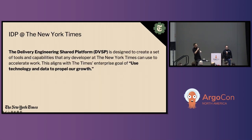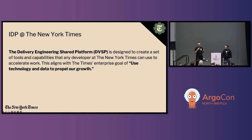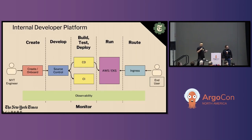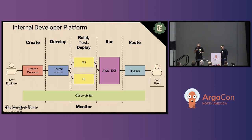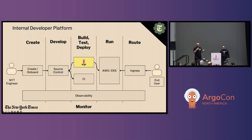That's why we created the IDP inside the New York Times, and we call it the DVSP — Delivery Engineering Shared Platform. It's a set of capabilities, tools, and best practices available for every developer at the New York Times, with the goal of providing an easy way to follow the golden path of application development. We created a self-service tool that generates a repo, templatized source code, CI/CD pipelines, and onboards your application to the shared cluster. Since we're at ArgoCon, it's important to highlight the important role of Argo CD in this platform. We chose Argo CD as our CD tool because it's open source, it follows GitOps principles, and it's just great at doing its job.